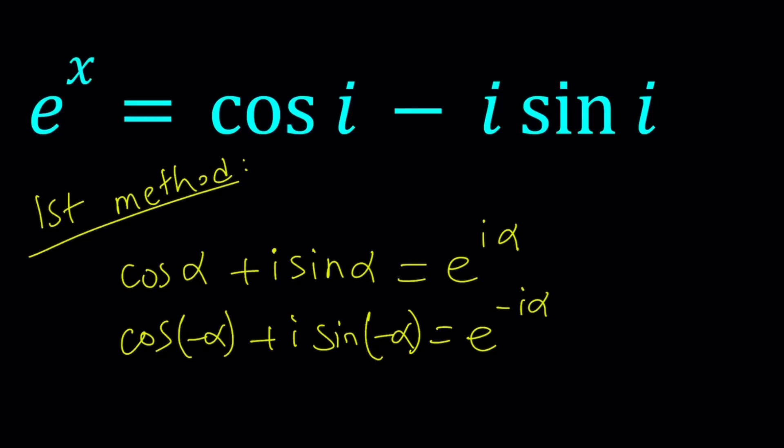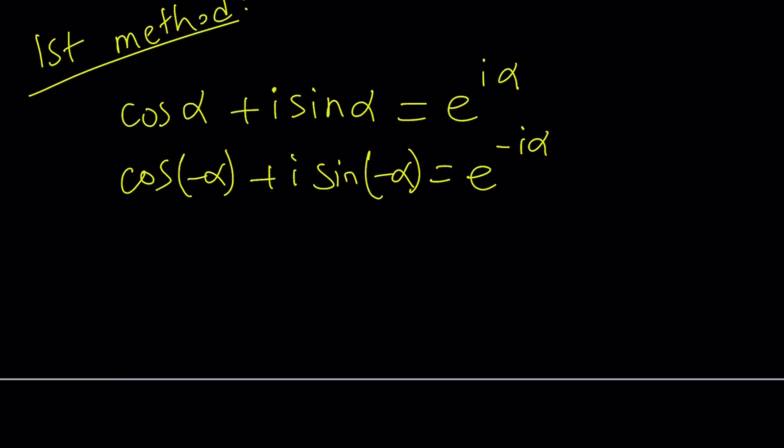I'm just going to write it as negative i alpha. So this is what's really cool about it, but what happens? Cosine is an even function, which means it's just going to absorb the negative just like this, and sine is an odd function, which is going to spit out the negative. So it's going to look like this. That's how I taught my students.